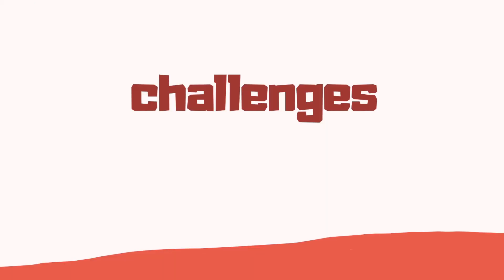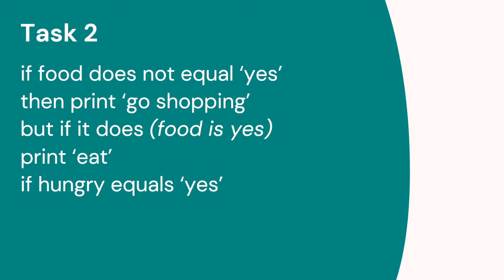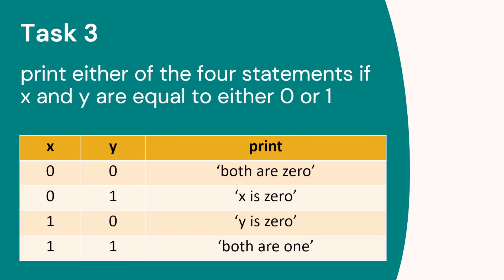Time for some challenges. Task one: print 'eat' if hungry equals yes and food equals yes, but if food does not equal yes then print 'go shopping'. Task two: if food does not equal yes, print 'go shopping', but if it does, print 'eat' if hungry equals yes. Task three: print either of four statements depending on x and y being equal to either zero or one.